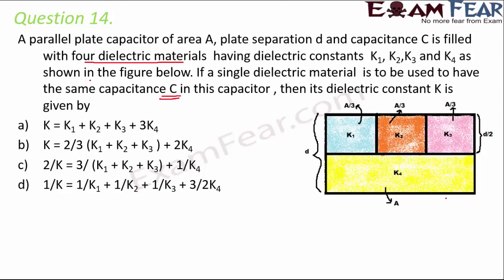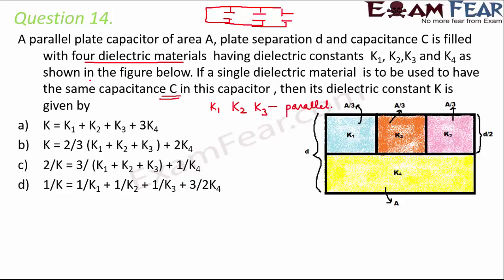When we have four different dielectric materials, the net capacitance of the entire system is C. To calculate this, look at the diagram differently: k1, k2, and k3 are parallel to each other — not in series — because both ends of all three capacitors are connected together. Therefore k1, k2, and k3 are in a parallel combination.